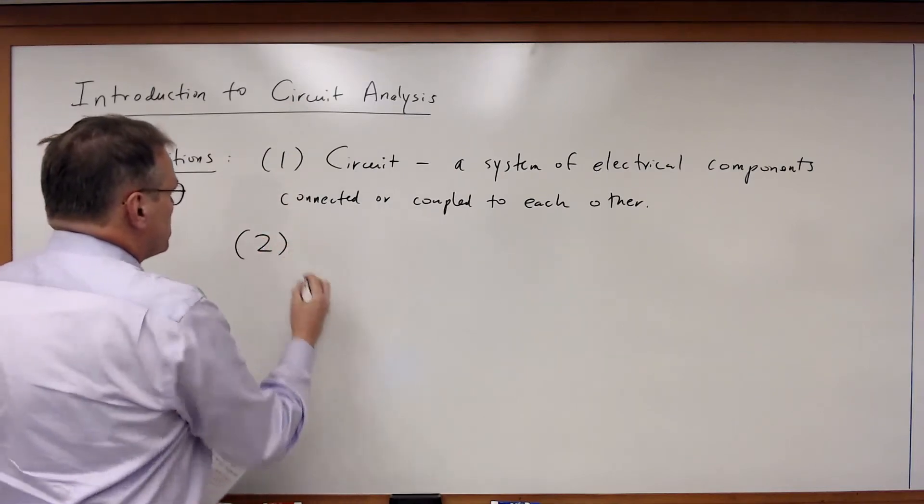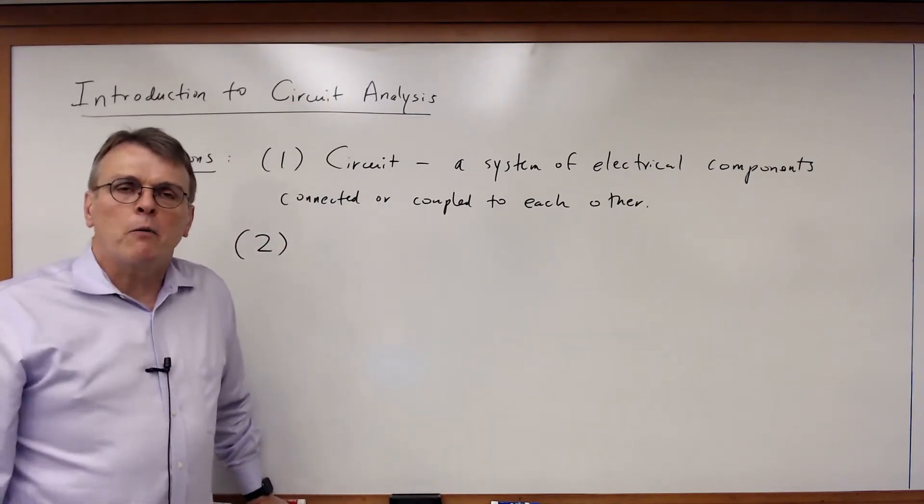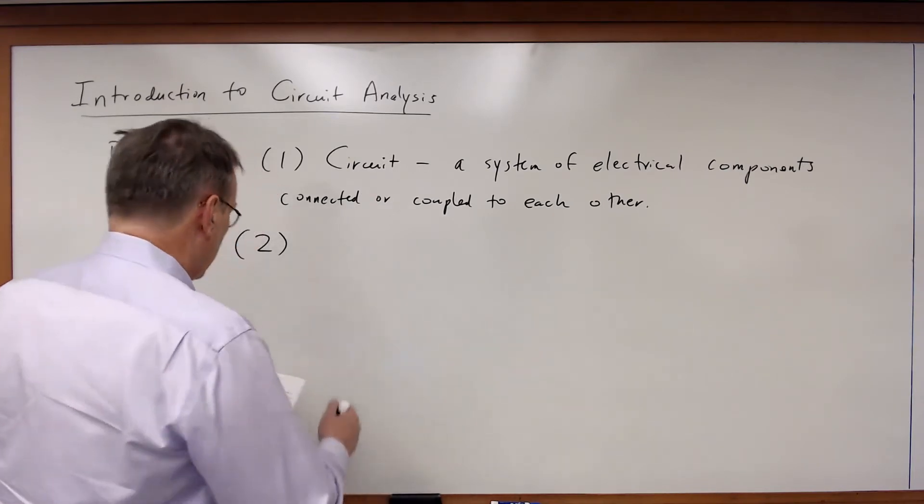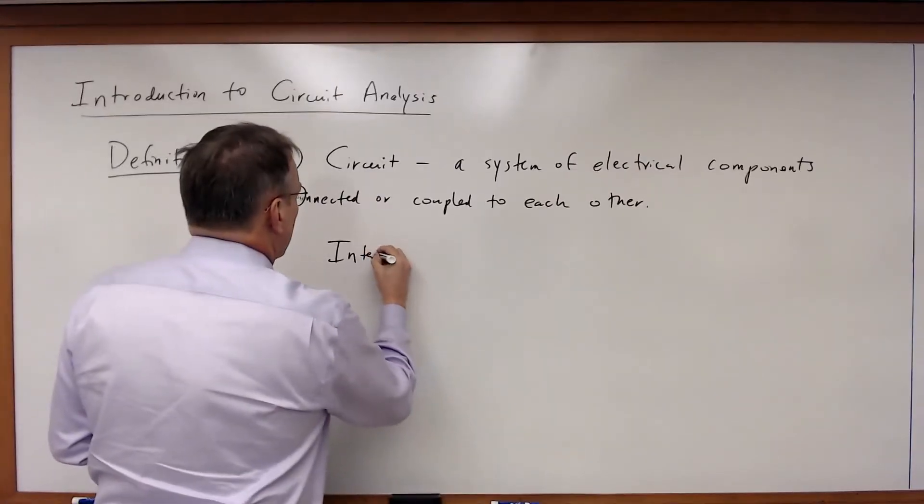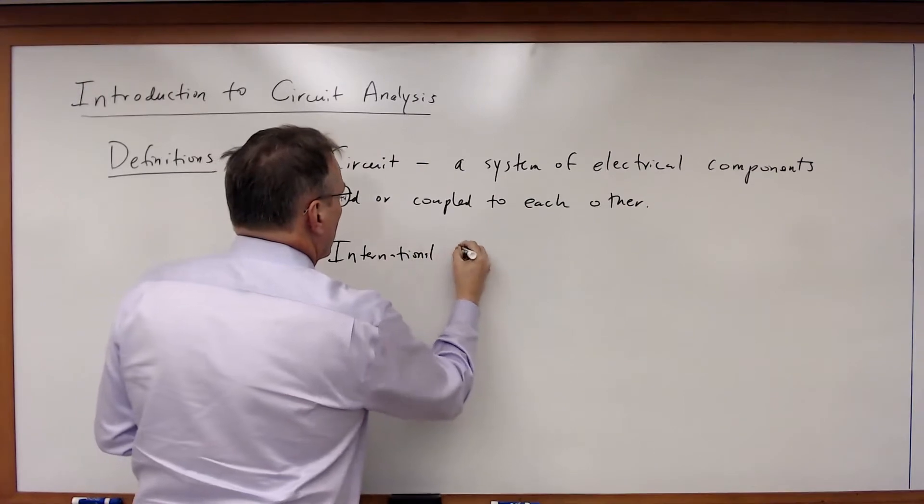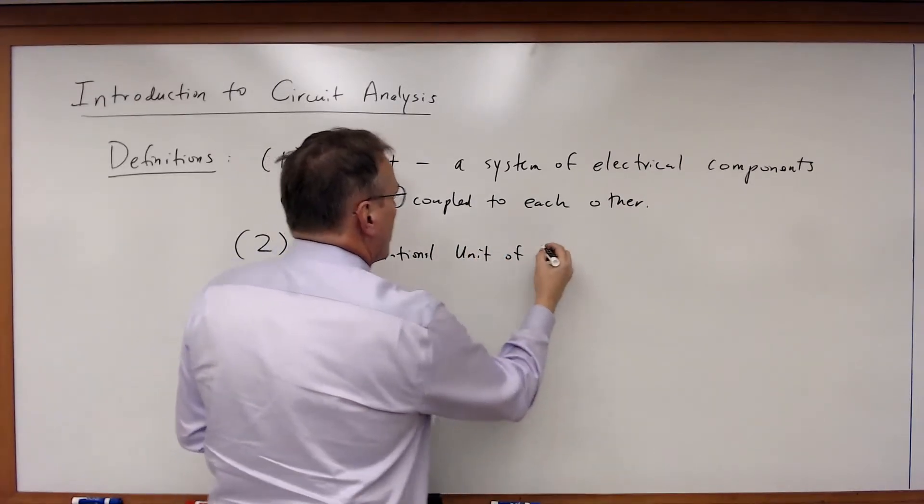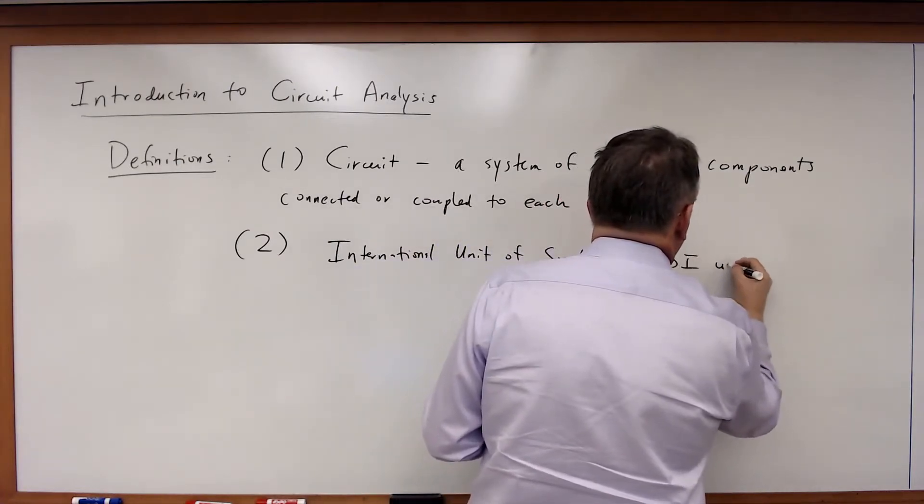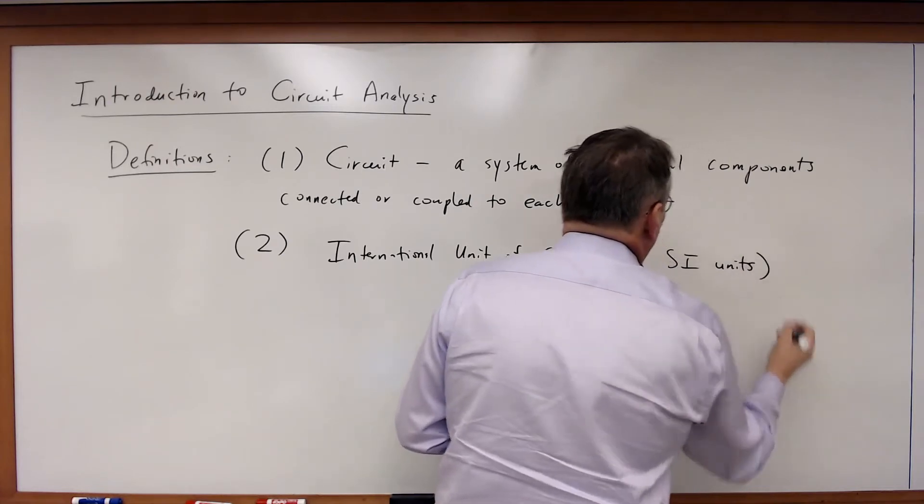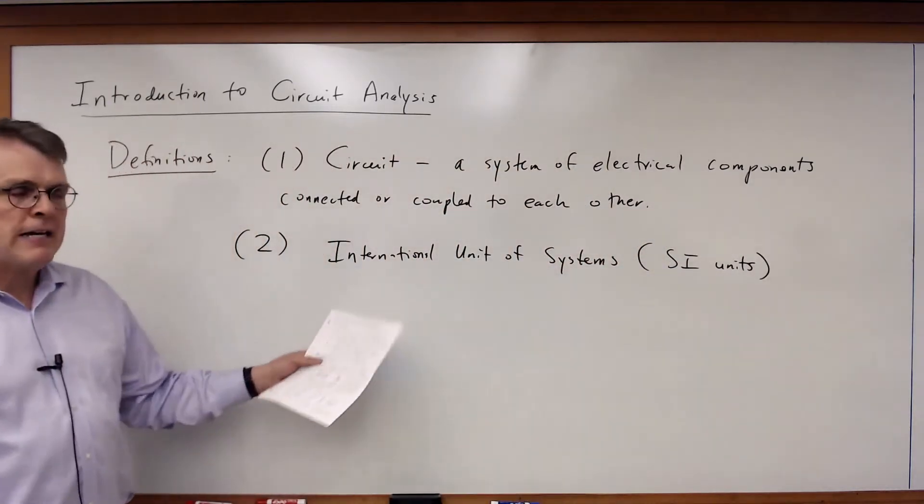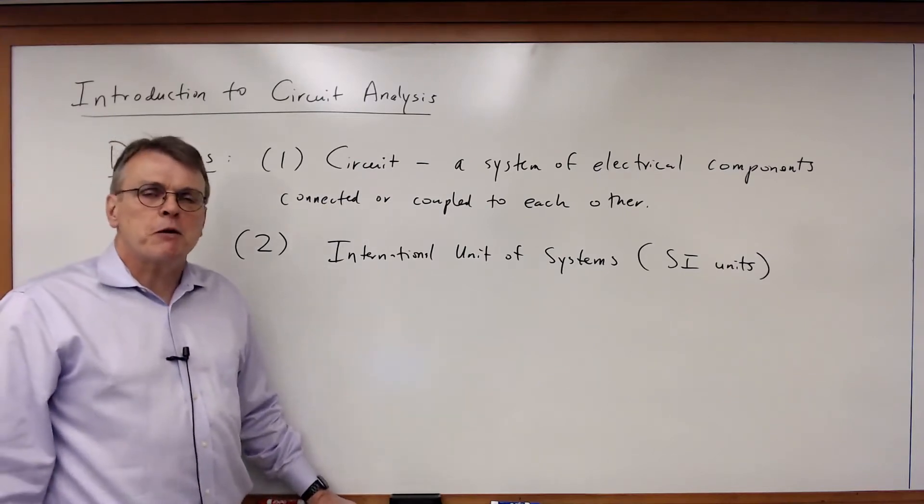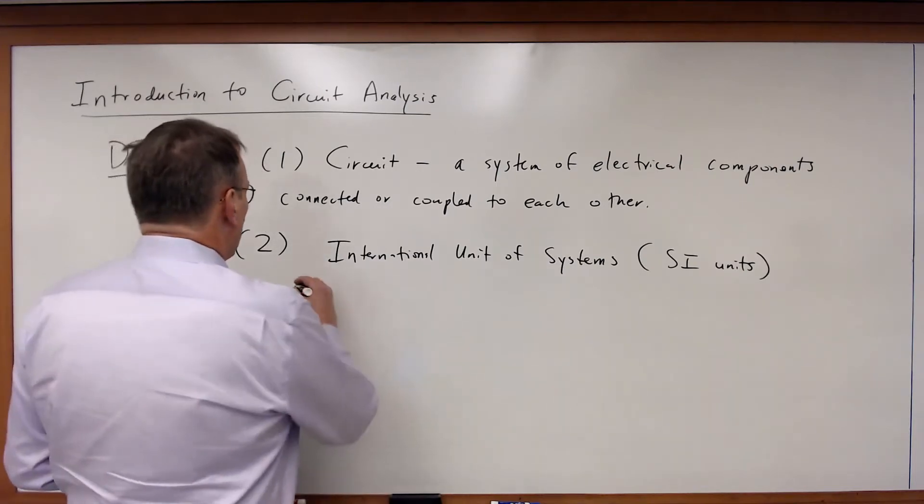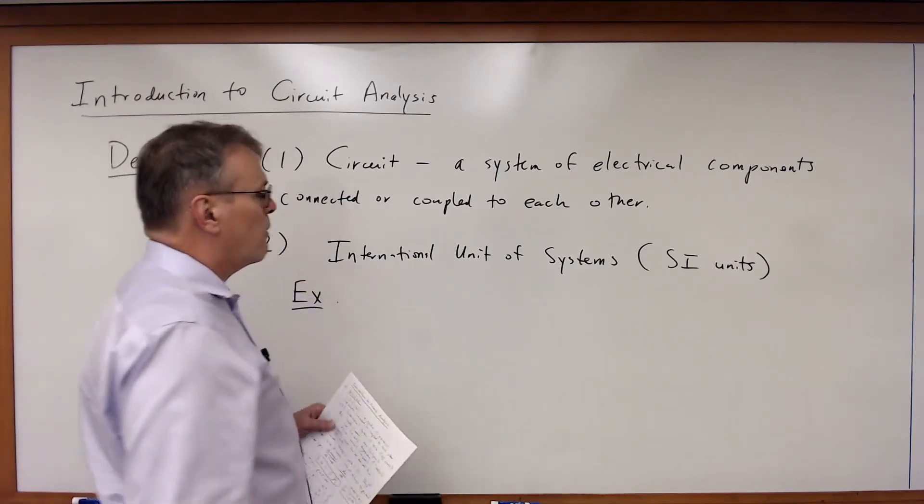Second set of definitions you need to know has to do with something you've probably already dealt with in other courses or in background in physics. And that is the SI unit of systems. Your SI units, and if you've taken any classes in chemistry, physics, or any of the other modern sciences, you've seen these before. So what are the types of quantities and units we run across in the SI system?